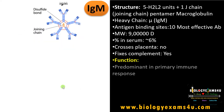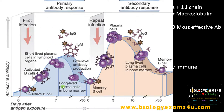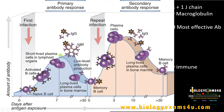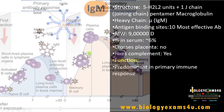IgM is the predominant antibody in the primary immune response, along with IgG. As seen in the graph, the first antibody produced as a result of an immune response is IgM. Being a pentamer with 10 antigen-binding sites makes it the most effective. During the secondary immune response, IgM concentration decreases while IgG concentration increases.